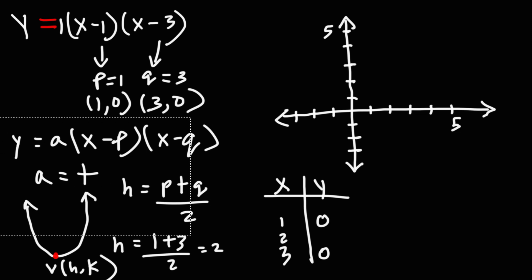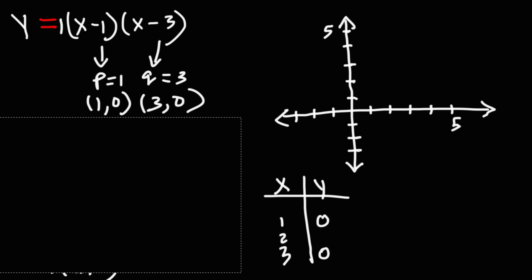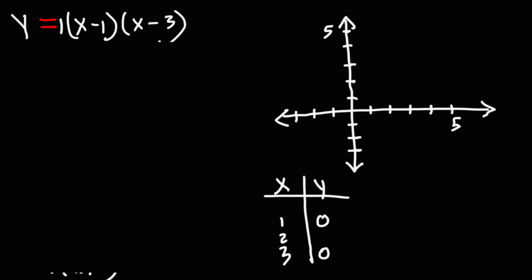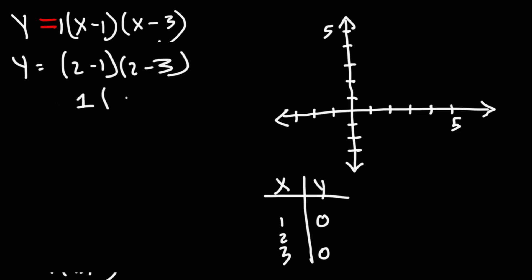In order to find the y-coordinate, we need to plug it into the original equation. Let's replace x with 2. So 2 minus 1 is 1, 2 minus 3 is negative 1, and 1 times negative 1 is negative 1.